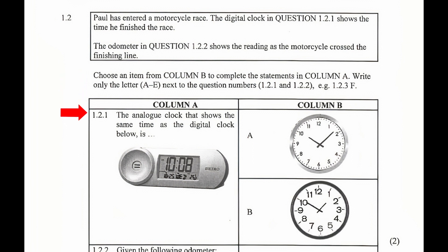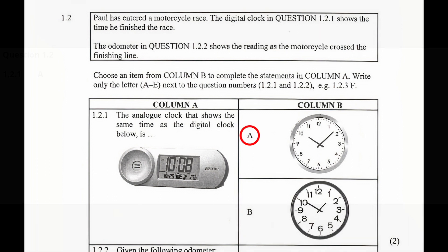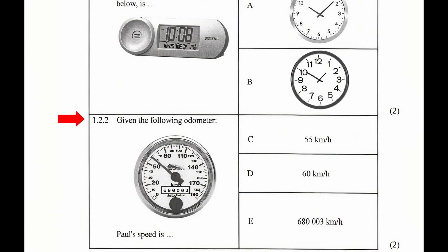1.2.1: The analog clock that shows the same time as the digital clock below is A. 1.2.2: Given the following odometer, Paul's speed is D.